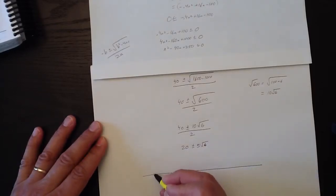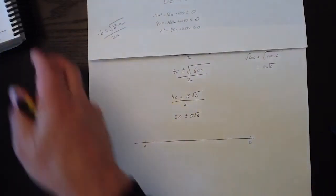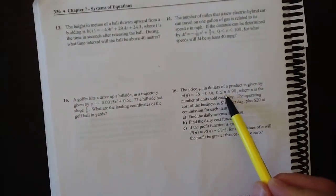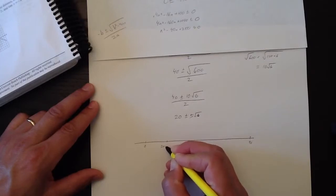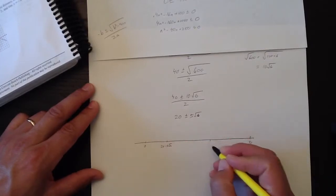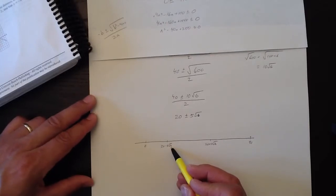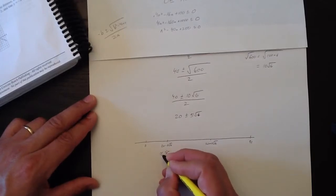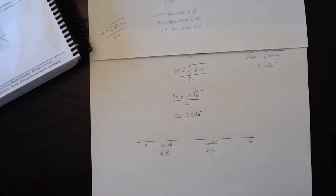If we put them on a number line like this. Let's put 0 here, 90 here. Remember, n has to be between 0 and 90. That was one of the restrictions we got right off the top. Over here is what we'll call 20 minus 5 root 6. And over here is 20 plus 5 root 6. I don't know exactly what these numbers are, but I know that root 6 is going to be like 2.4 or something. And 5 times 2.4 is like 12. So, 20 minus 12 will be somewhere like 8-ish. And if 5 root 6 is about 12, this will be somewhere around 32.